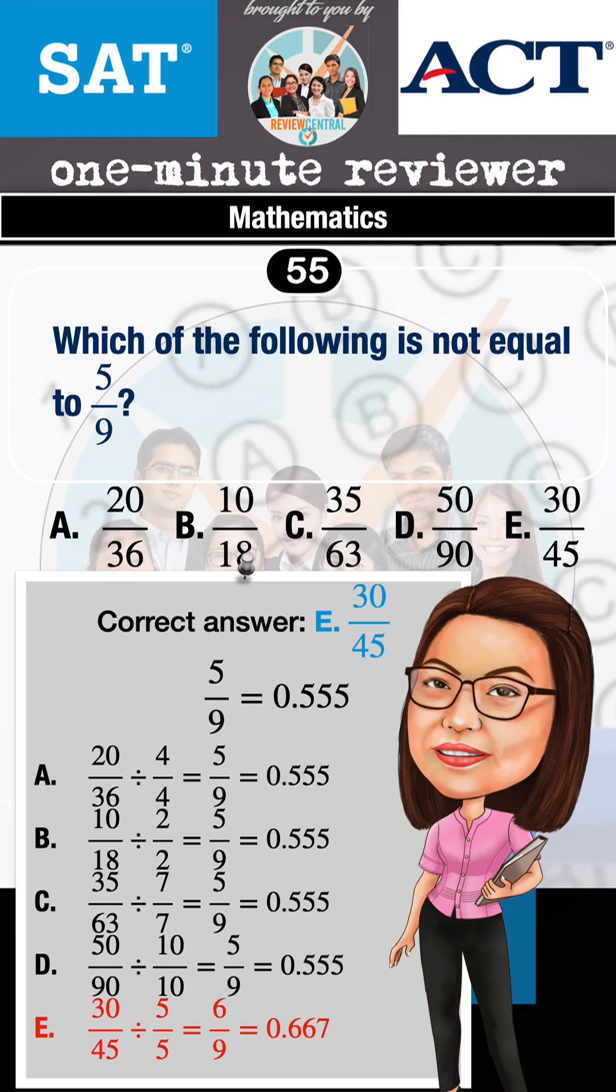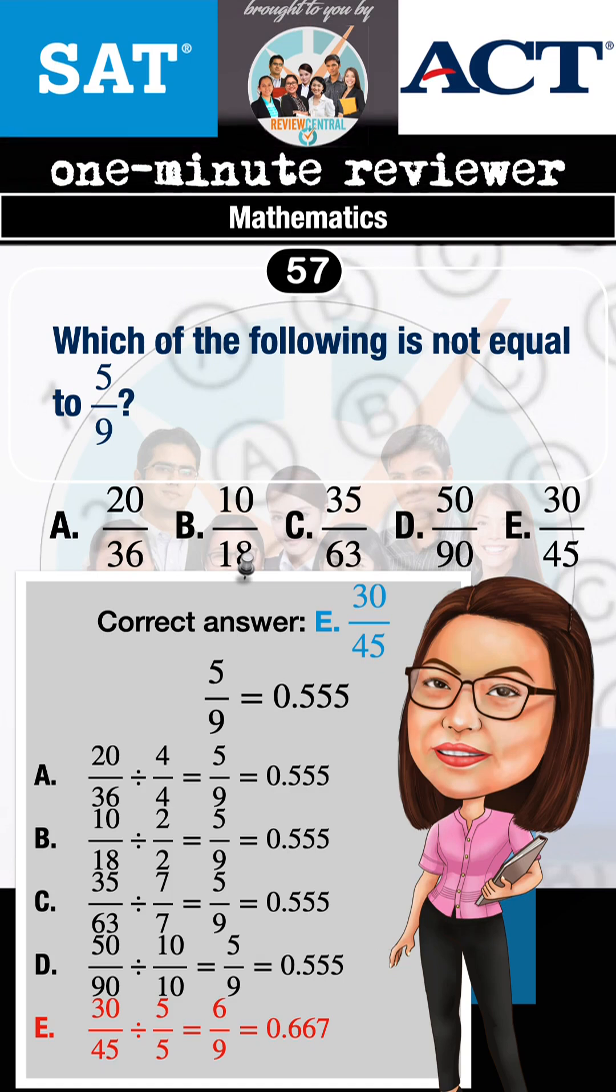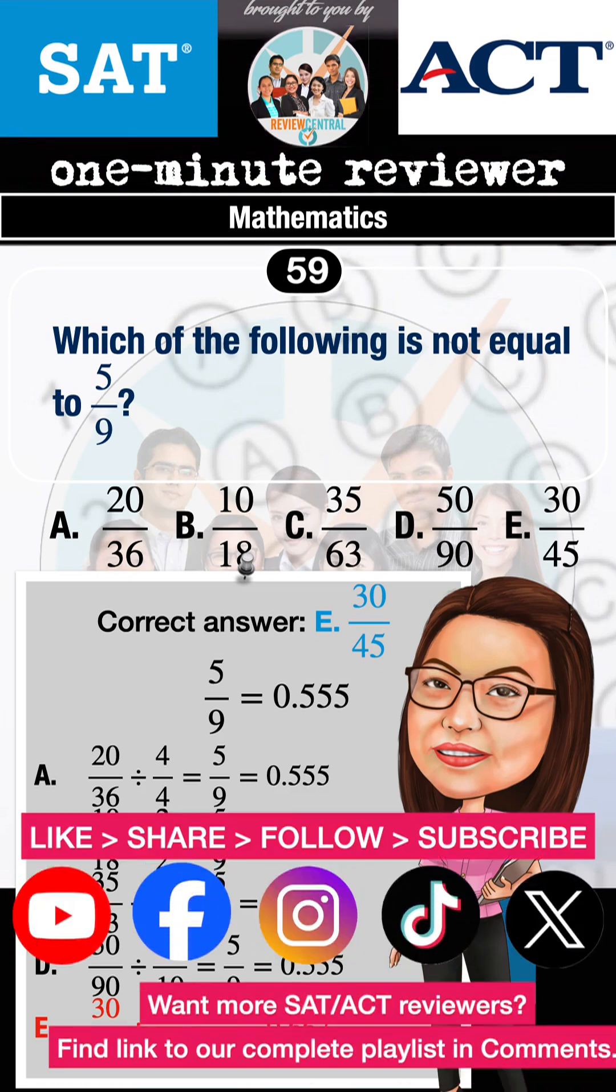For E, the common factor is 5, but the result will be 6/9 instead of 5/9.